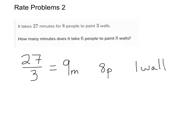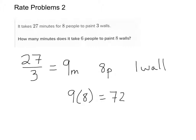Now we think: how long would it take for 1 person to paint 1 wall? We have 8 people doing the work — it's 9 minutes for 8 people to paint 1 wall. That means each person is taking 9 minutes, so 9 times 8 tells us it would take 72 minutes for 1 person to paint 1 wall.